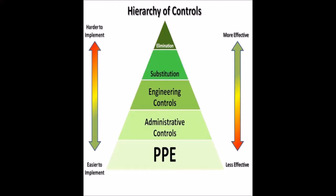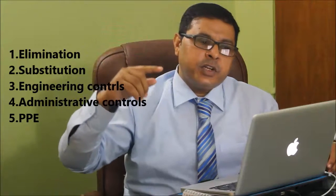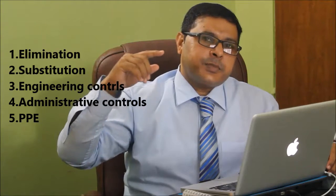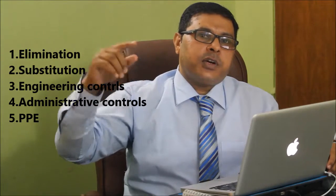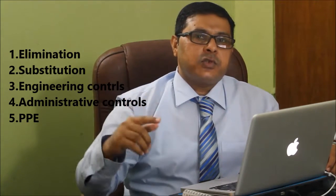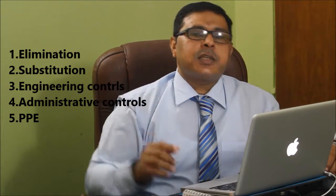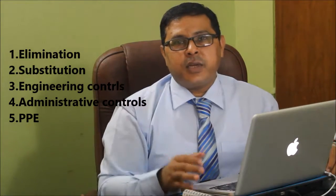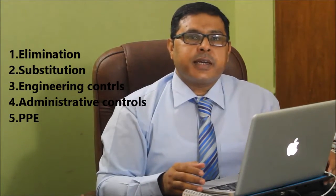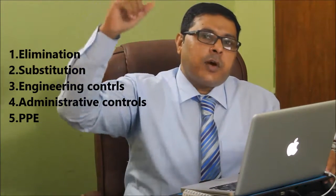What are the key elements of the hierarchy of control? As you can see in the picture, the first one is elimination, the second is substitution and/or reduction, the third is engineering control, the fourth is administrative control, and the fifth is personal protective equipment.